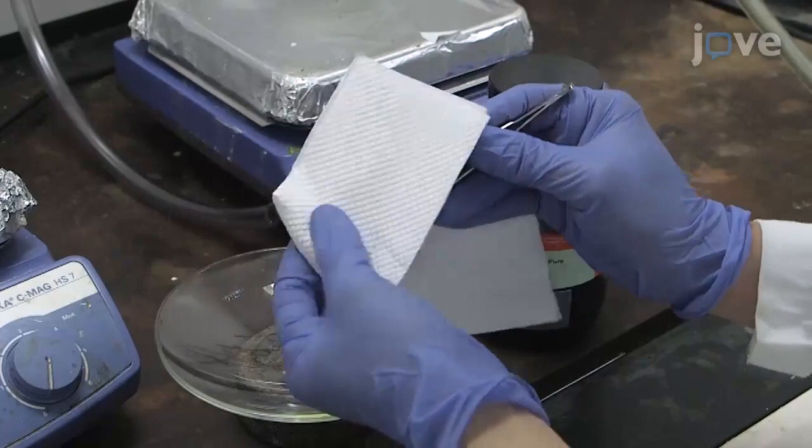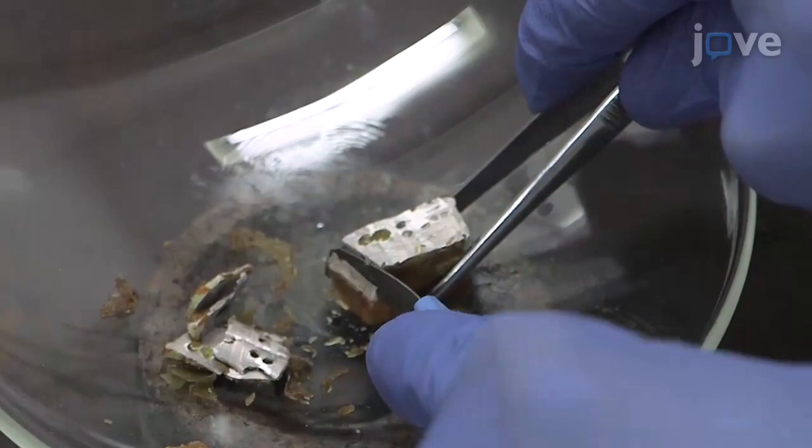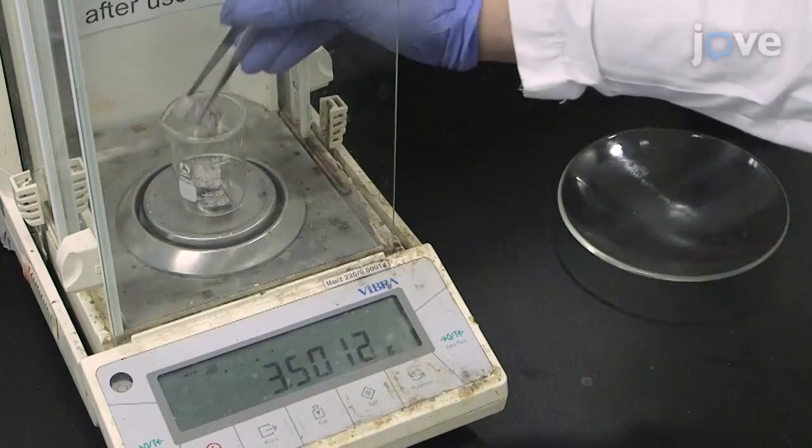Wipe away residual mineral oil with a paper towel and scrape off the oxide layer with a knife. Quickly weigh out approximately 6.7 grams of metallic sodium and note the weight.